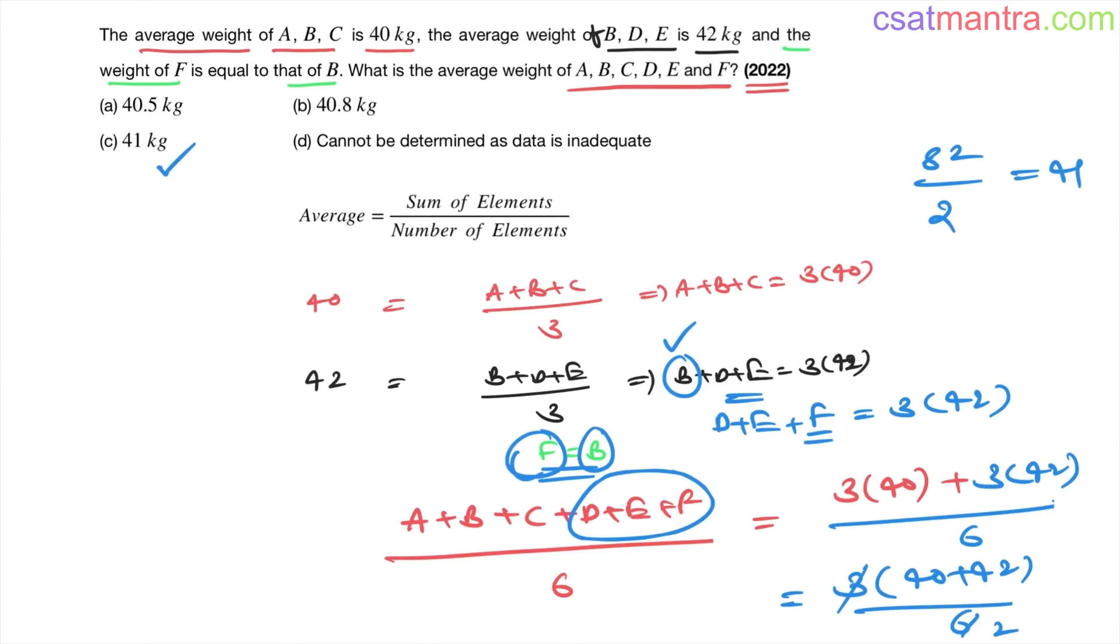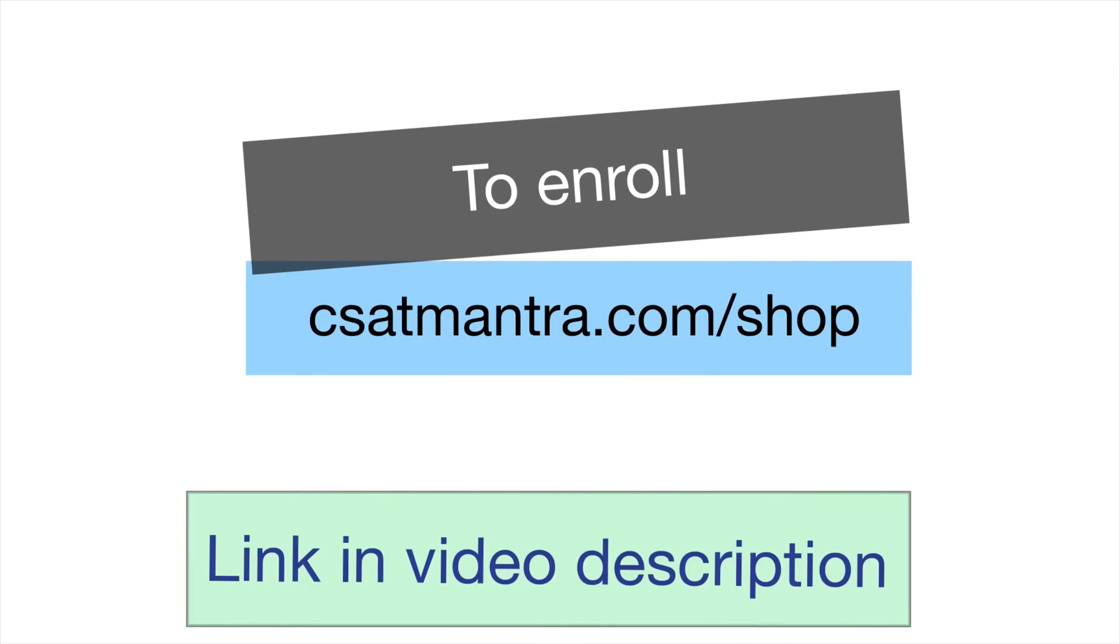Given information in terms of equation, this in terms of equation, this. Okay, we got D plus E plus F is equal to 3 into 42. We want the average here. Okay, so again I have written what we wanted in terms of equation, and then I got it. Okay, 41 as answer.